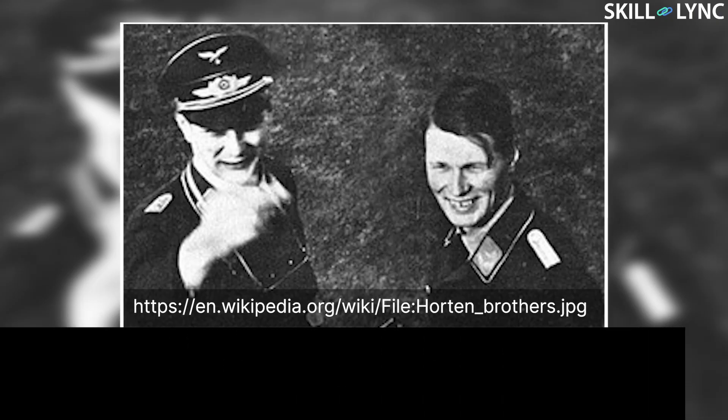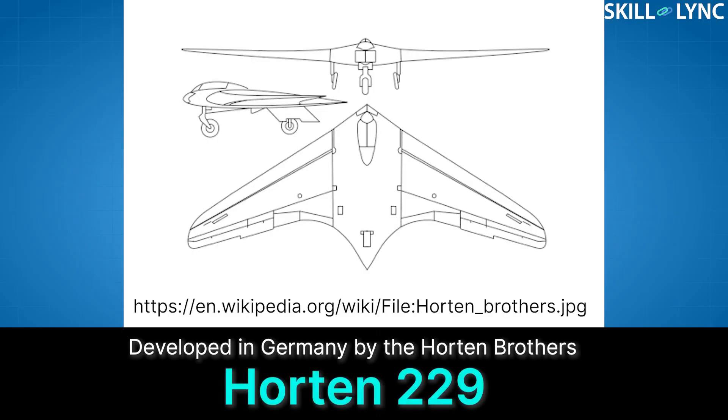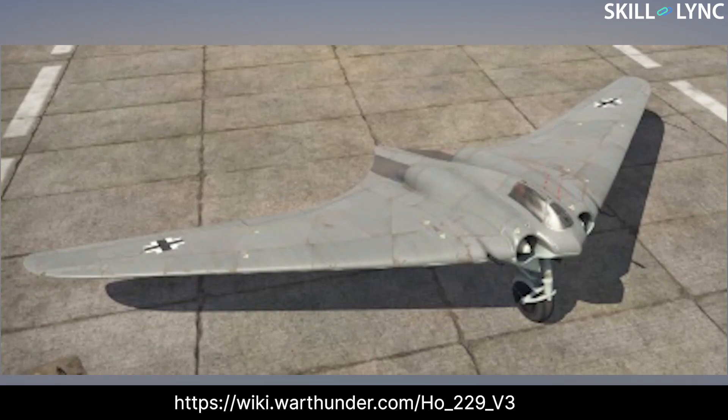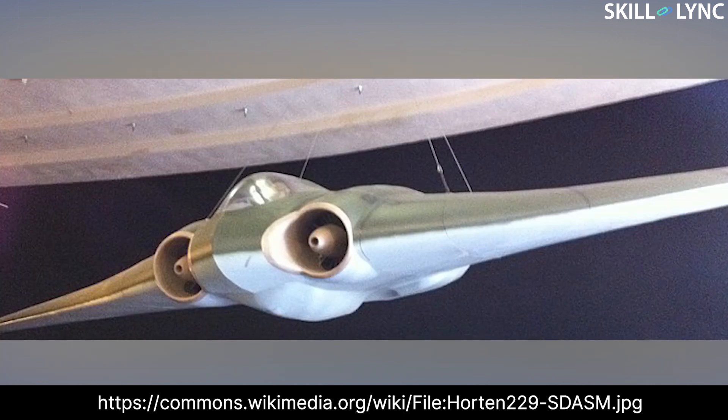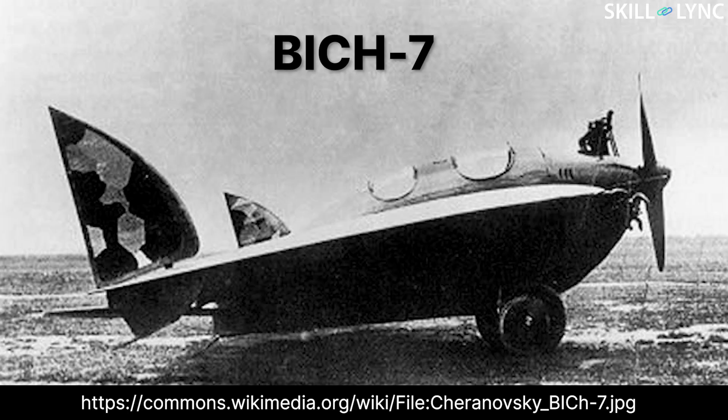The first jet-powered flying wing was developed in Germany by the Horton brothers. It was called the Horton 229. Many flying wing aircraft were developed before the Horton 229, like the Big 3 and the Big 7, but they were not true flying wings as they had a vertical stabilizer to aid in the yaw action of the aircraft.